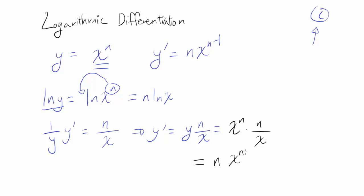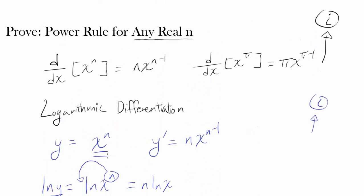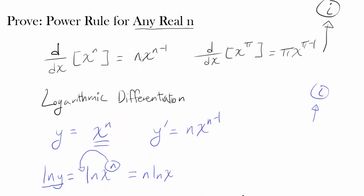We have n times x to the n minus 1 power as our y prime, and we are done. The derivative of x to the nth power is n times x to the n minus 1 power.